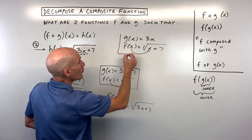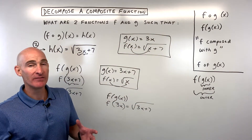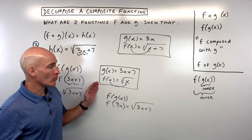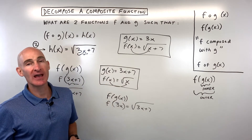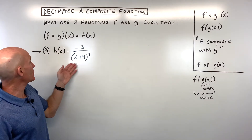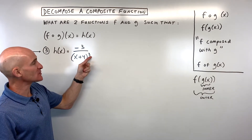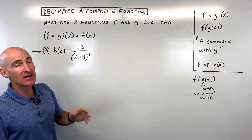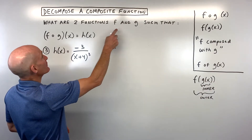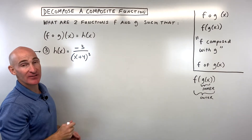There are different ways to do this decomposition process to figure out what those two original functions could have been — more than one answer. For the third example: h of x is equal to negative 3 over the quantity x plus 4 to the third power. See if you can decompose this into f and g such that f of g of x equals h of x.